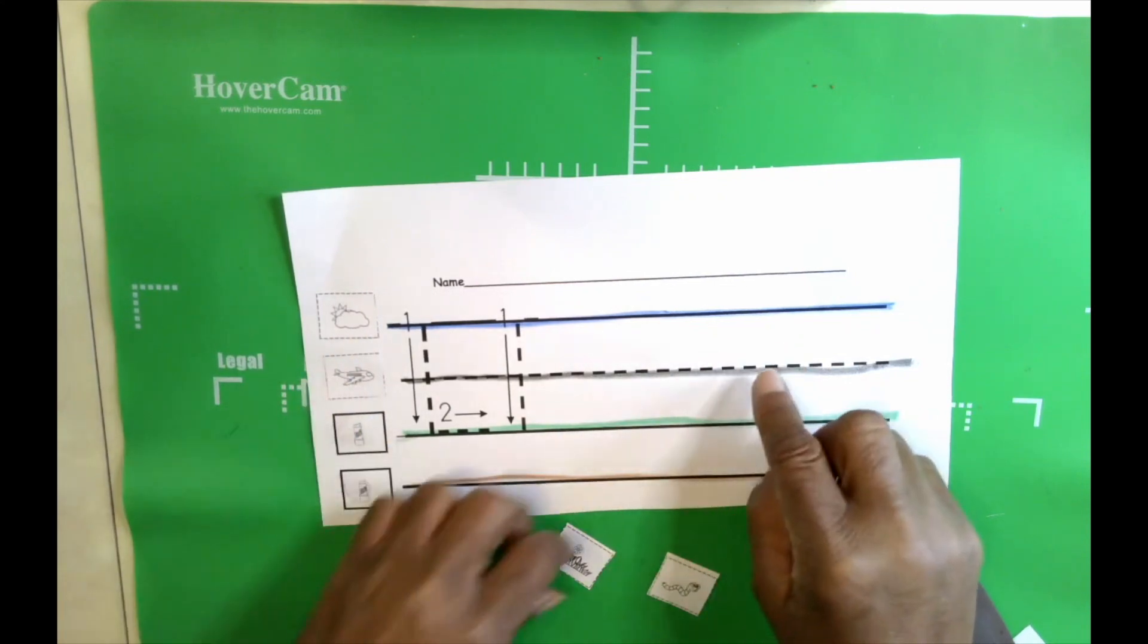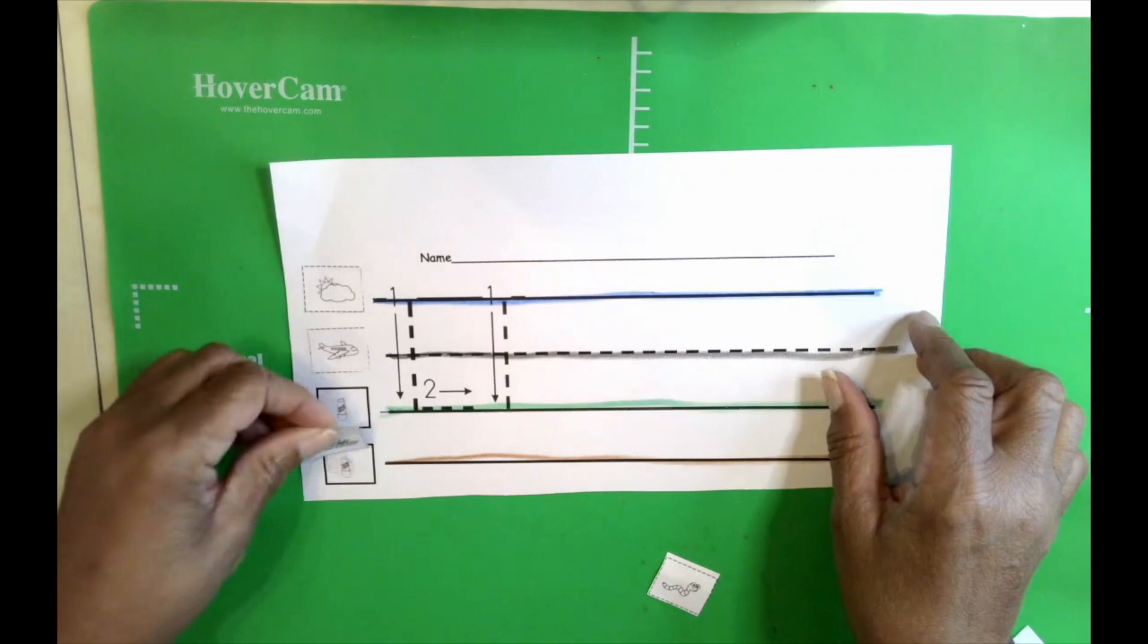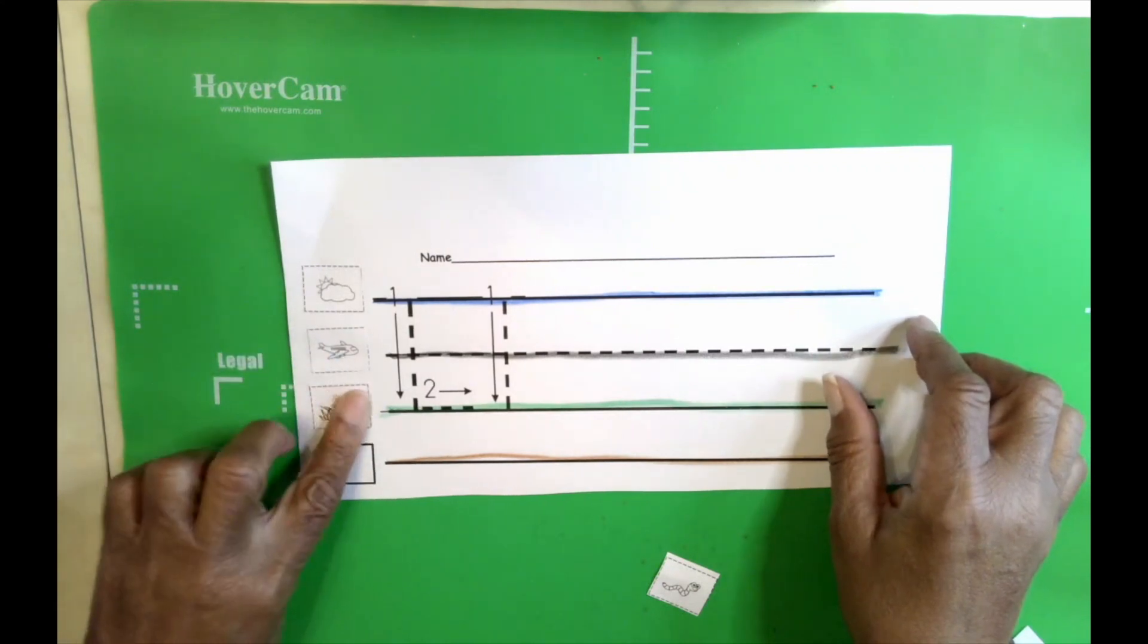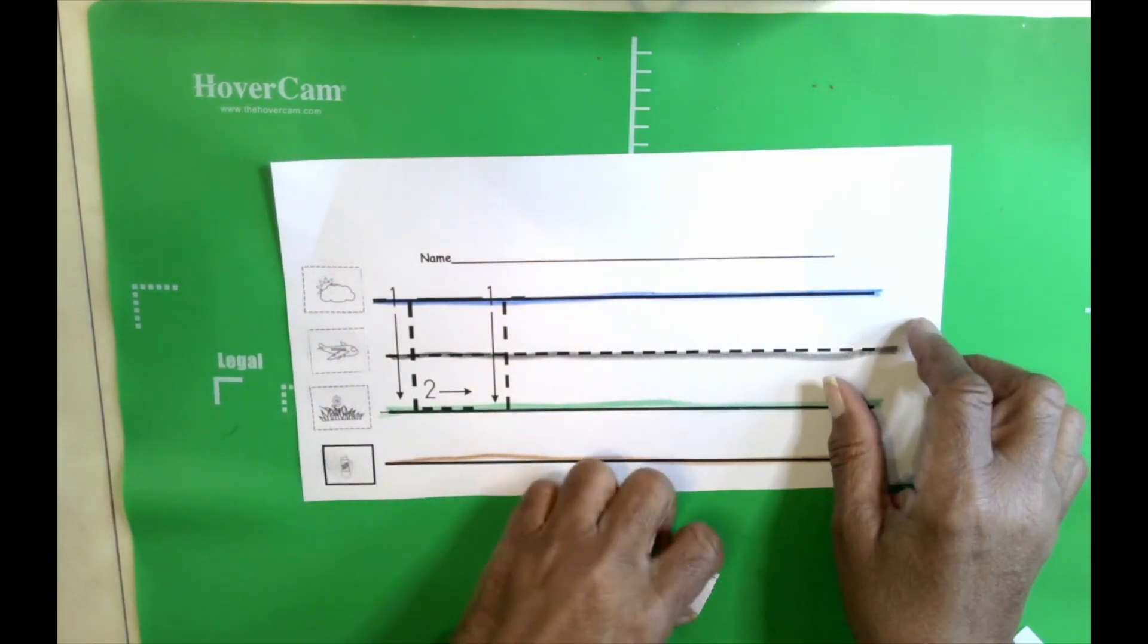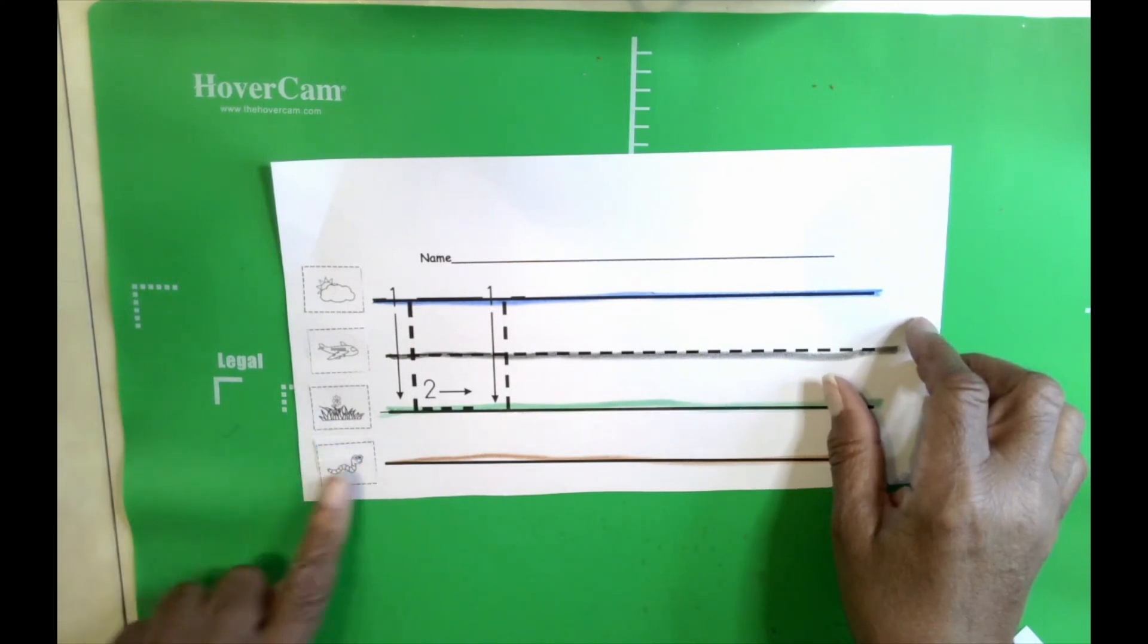What is the third line called? The grass line. Boys and girls, you're so smart. The grass line. And the last line is the worm line.